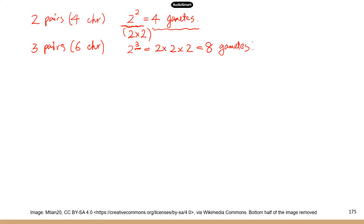If you have four pairs of chromosomes, that's two to the fourth — two by two by two by two — which is 16 different gametes. That number increases exponentially.